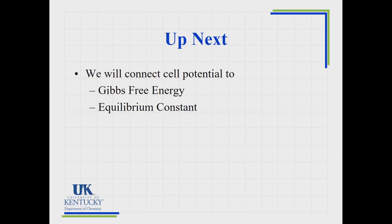If a reaction runs with a positive cell potential, it will run spontaneously. In our next lesson, we'll see that cell potential is connected to delta G and the equilibrium constant K—all three of these things are linked together.